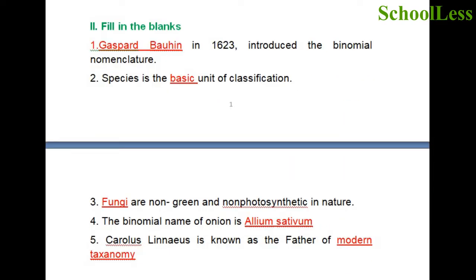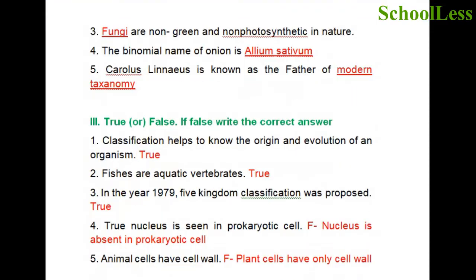Question 2: Fill in the blanks. Dash, in 1623, introduced the binomial nomenclature. It is Gaspard Bauhin who introduced binomial nomenclature for the first time in the year 1623. Species is the basic unit of classification. Fungi are non-green and non-photosynthetic in nature. The binomial name of onion is Allium sativum. Carolus Linnaeus is known as the father of modern taxonomy.